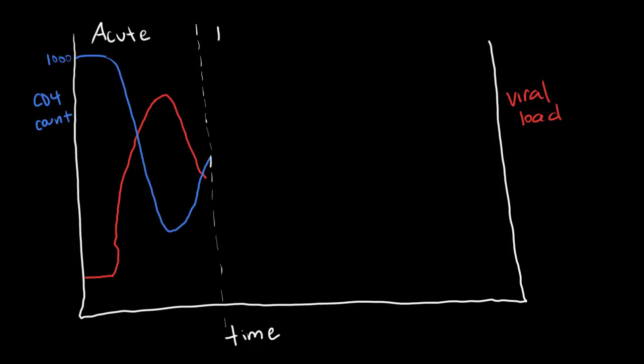The next phase is the latent phase. It's called latent because HIV is in the patient's body, but it's not causing any symptoms yet. HIV continues to reproduce, but not as quickly as before because there aren't as many host cells to support it. So viral load goes up, but not as quickly as before. And at the same time, CD4 levels go down, but again, not as quickly as before.